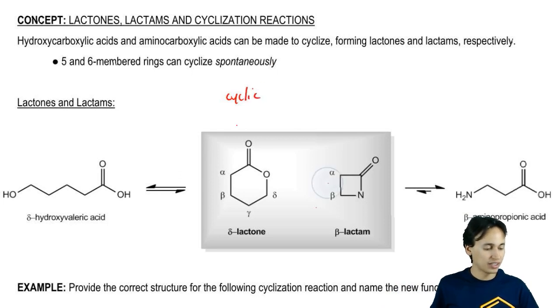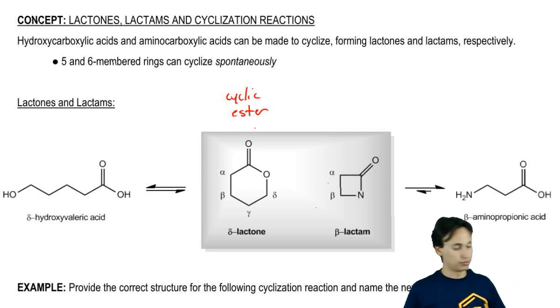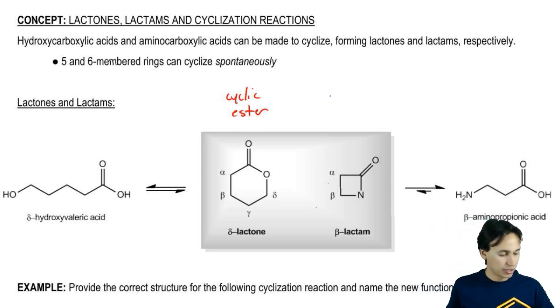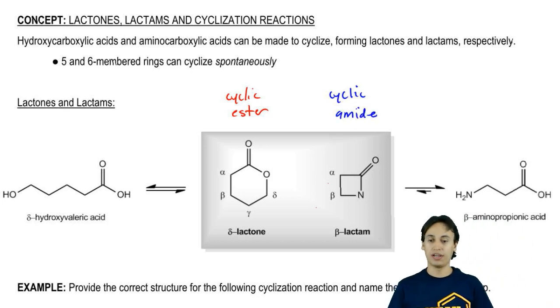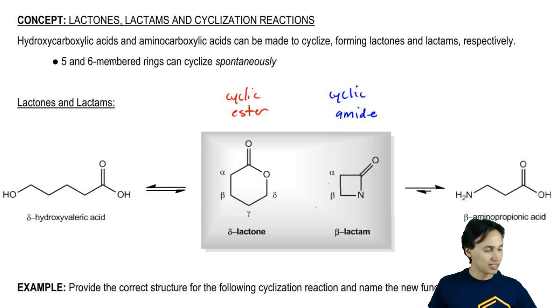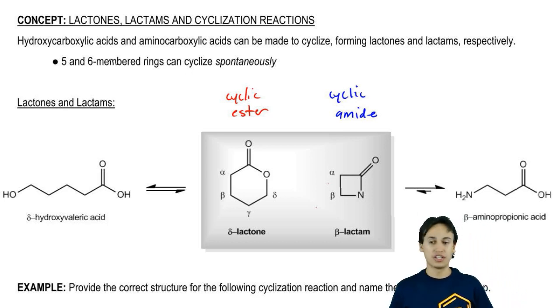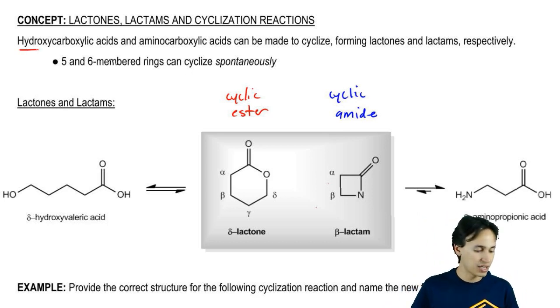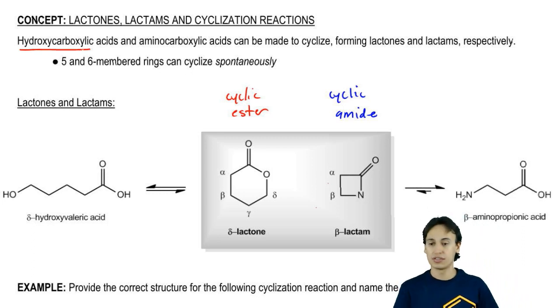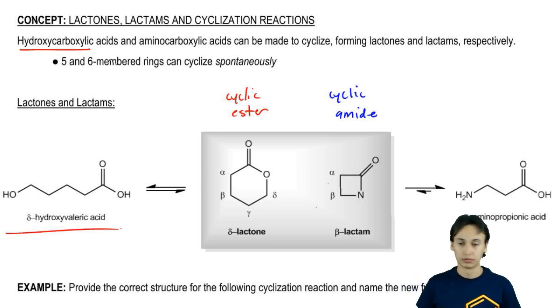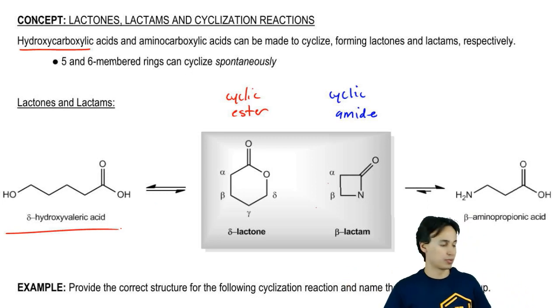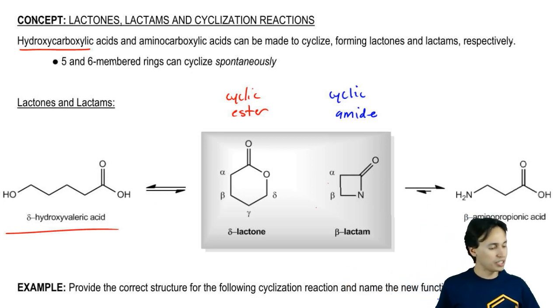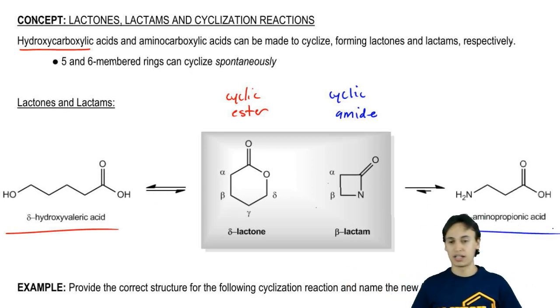A cyclic ester is called a lactone. A cyclic amide is called a lactam. The way that you get these is through the cyclization of either hydroxycarboxylic acids. Here I have an example here. A hydroxy group on a carboxylic acid or aminocarboxylic acids as I have here.